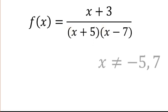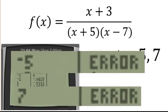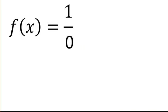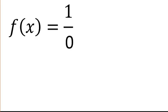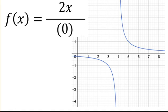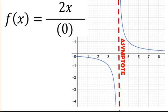Factor that piece and you'll know what inputs will make that denominator zero, yo. If you check those inputs in the calculator, then it will say it's an error, yo. Don't divide by zero, it's an asymptote. Don't divide by zero, it makes an asymptote.